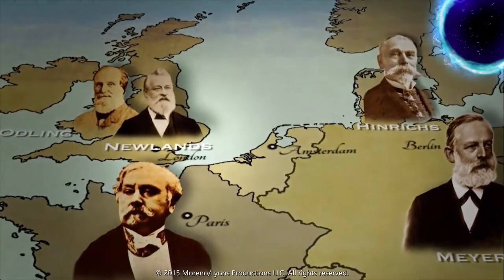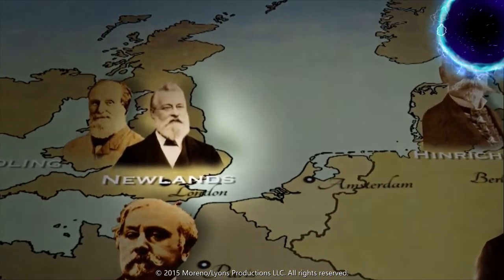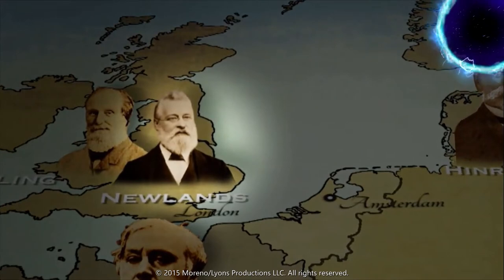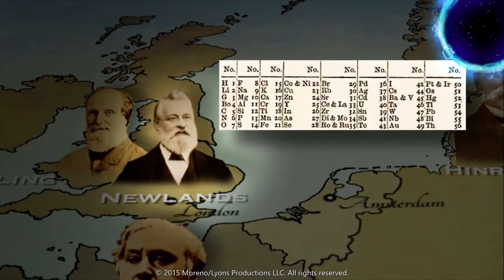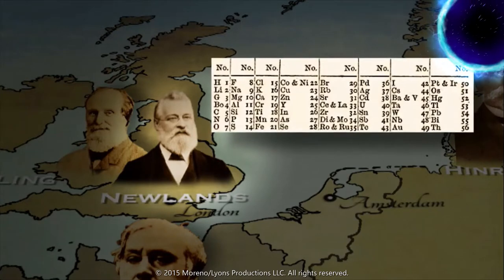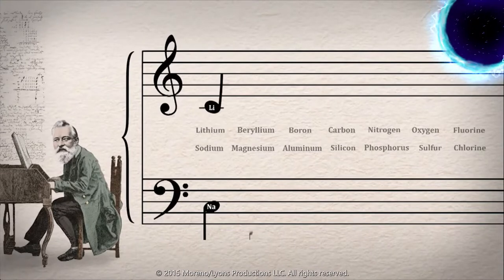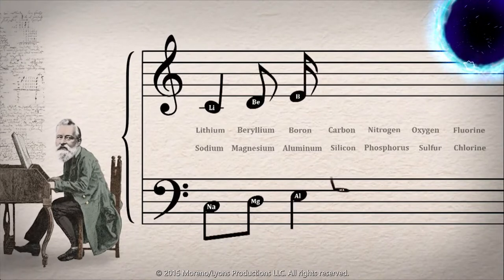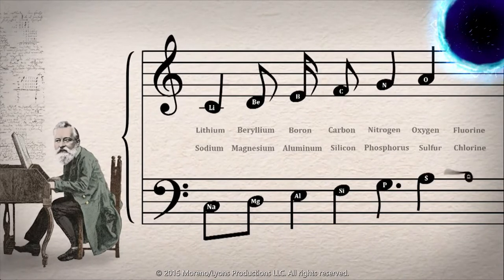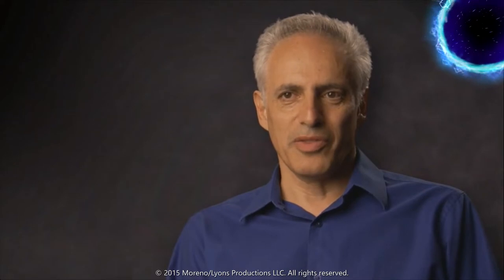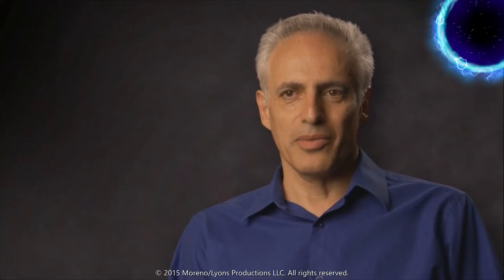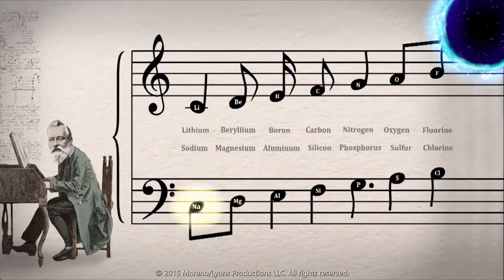The next to give it a go was a British chemist named John Newlands — a sugar chemist, an industrial chemist working in London. He was able to come up with a very respectable periodic system, which he then presented to the British Chemical Society and was essentially laughed out of court. Newlands had arranged the elements by atomic weights in rows of seven and found that their properties repeated like musical notes one octave apart. He called this the law of octaves.